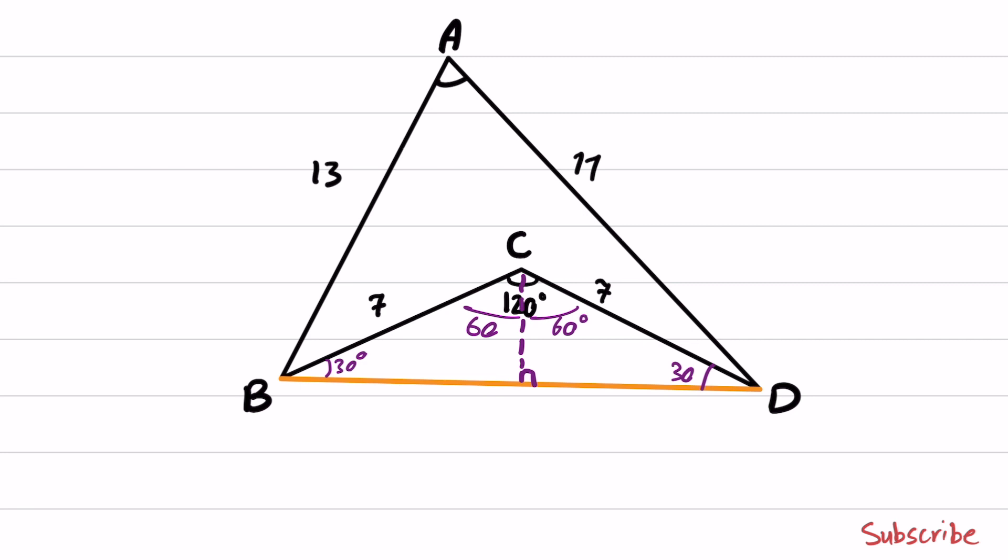And if you use the sine of 60 degrees, you can calculate this part, which becomes 7 times square root of 3 over 2.